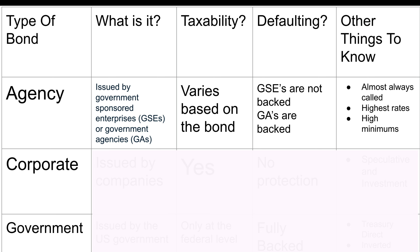Starting off with agency bonds, these can really be issued by two different sorts of entities: number one being government-sponsored enterprises or GSEs, and then we have government agencies or GAs. The taxability really varies based on the bond and based on who's issuing it — just know for now that it varies. In terms of what happens when they default, it sort of splits into two.